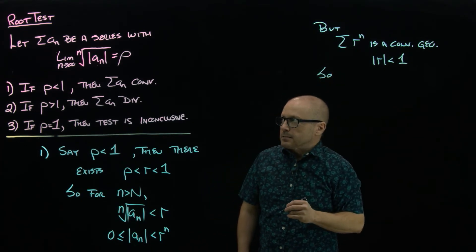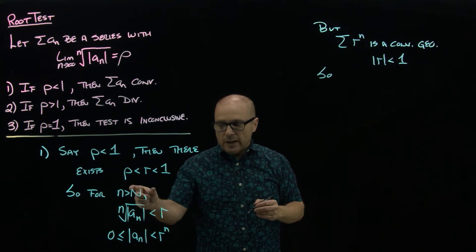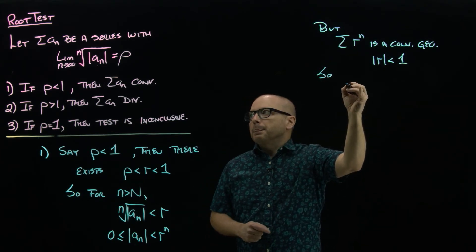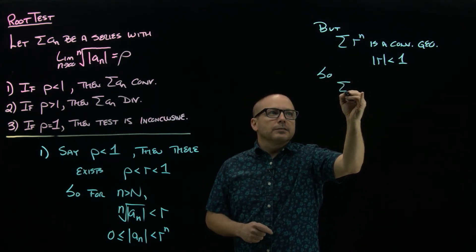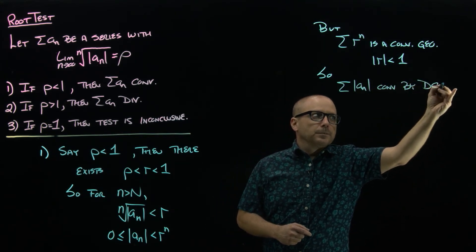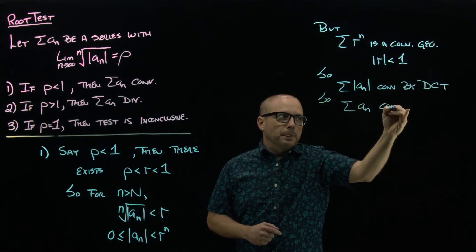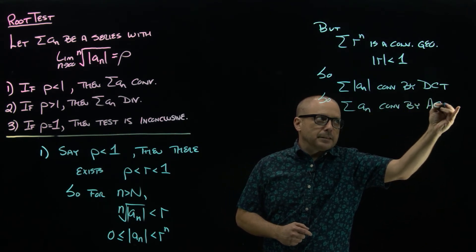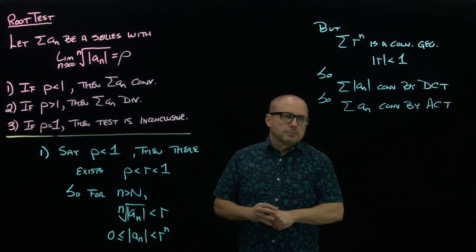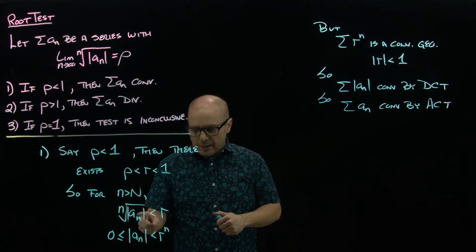So now, again, this is much like the ratio test—this isn't true at first necessarily, right, but eventually. So throwing in those first n terms is not going to change things, so the series of the absolute value of our terms converges by DCT, so our series converges by DCT.